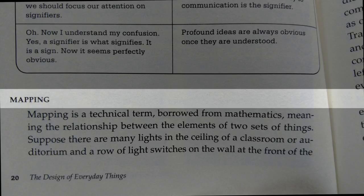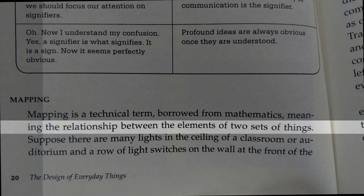Don Norman defines mapping as the relationship between the elements of two sets of things. He goes on to essentially define it as the spatial relationship between a set of controls and the things that it's controlling.